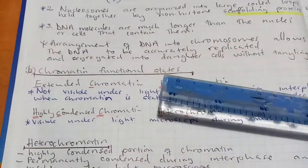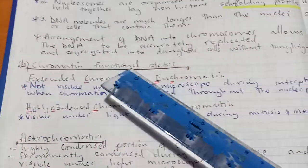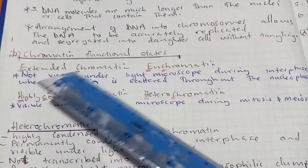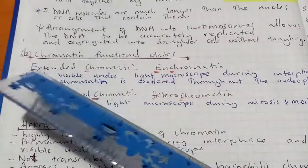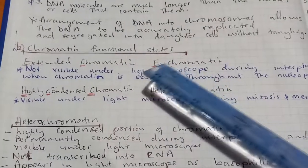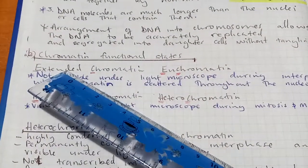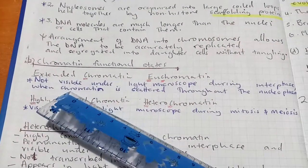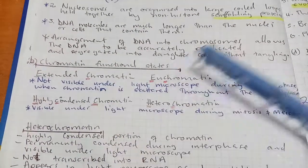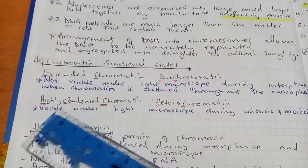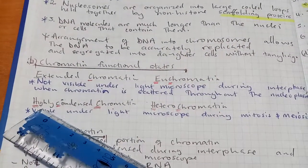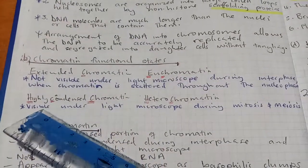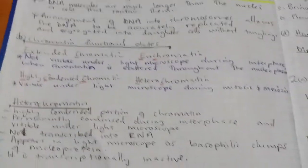Let's look at the functional states of chromatin. First, we have extended chromatin, also called euchromatin. Extended chromatin is not visible under the light microscope during interphase. The second functional state is highly condensed chromatin, also known as heterochromatin. This one is visible under the light microscope during mitosis and meiosis.